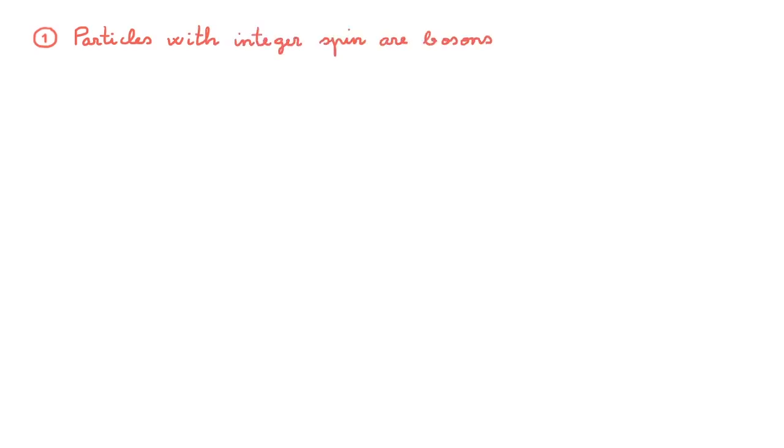The symmetrization postulate implies that all particles in nature can be classified into two groups: bosons and fermions. The question that emerges is how do we know if a given particle is a boson or a fermion? In introductory quantum mechanics we will use an empirical rule derived from experiment to answer this question. First, particles with integer spin are bosons. Examples include elementary particles like photons, but also non-elementary particles like mesons made of two quarks, or helium-4, an isotope of helium made of two protons, two neutrons, and two electrons.